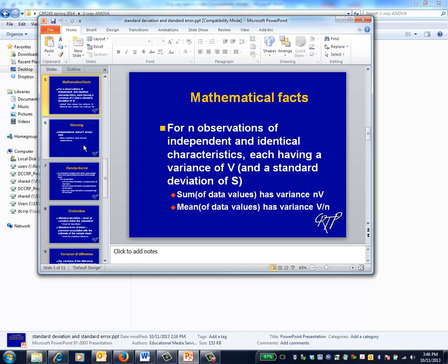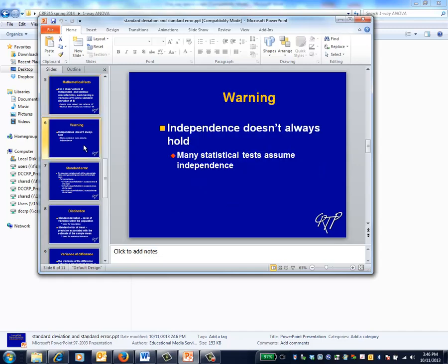Secondly, the variance of the mean is v over n. But in terms of standard deviations, the standard deviation of the mean is s over the square root of n. To comment, first these mathematical facts are derived from straightforward algebra. Second, the assumption of independence doesn't always apply.